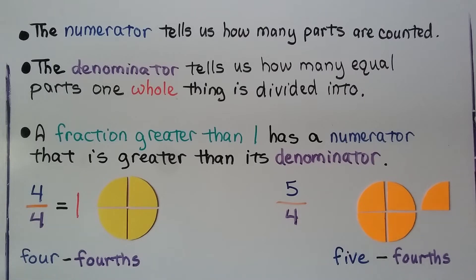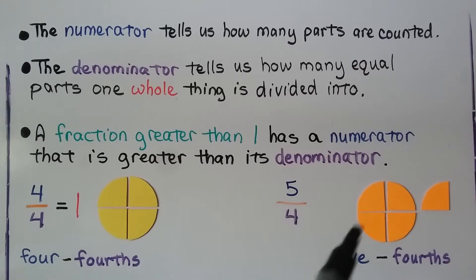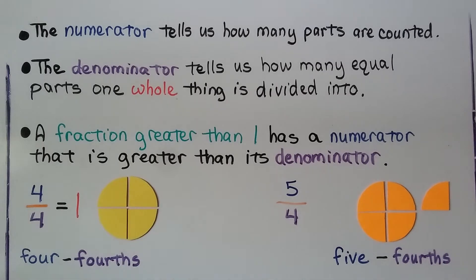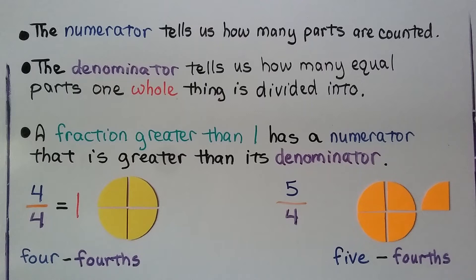Here it's divided into fourths, so our denominator is four, but we have one, two, three, four, five parts — that's five-fourths. Our numerator is larger than our denominator. A fraction greater than one has a numerator that is greater than its denominator, so this is a fraction greater than one. Five is greater than four.